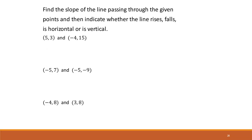Here we want to find the slope of the line that passes through the given points and then indicate whether the line rises, falls, or is horizontal or vertical. The formula for slope is m equals y2 minus y1 over x2 minus x1 — the change in y over the change in x. It doesn't matter how you label your points, but I'm going to label the first one x1, y1 and the second one x2, y2.